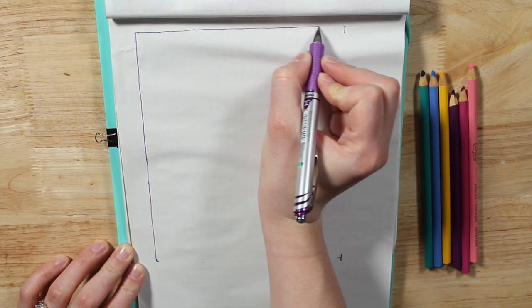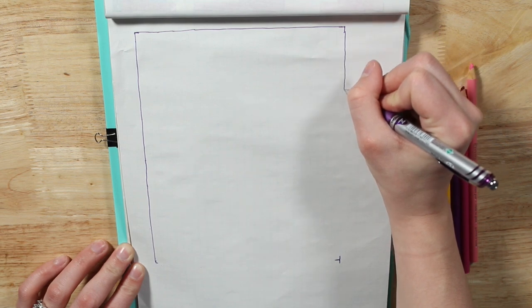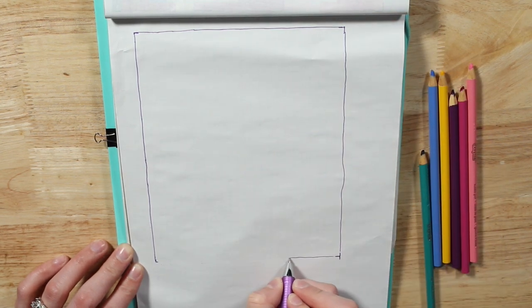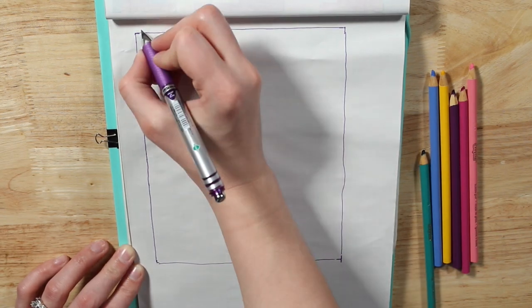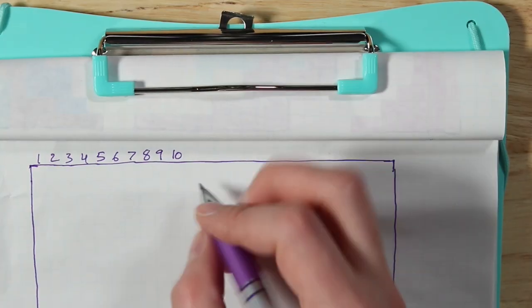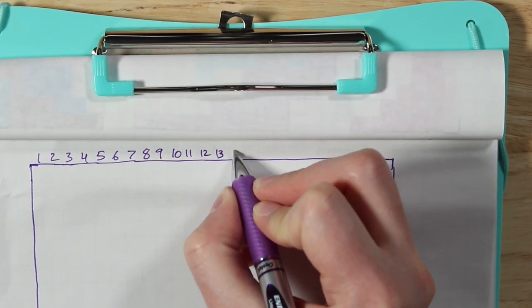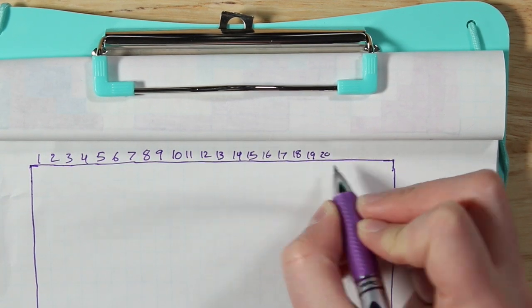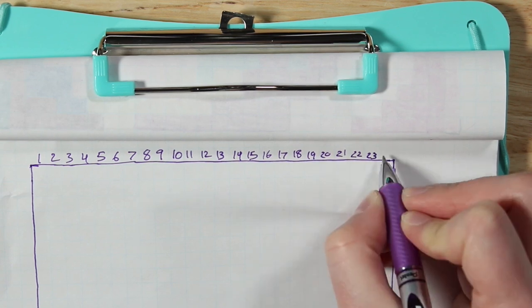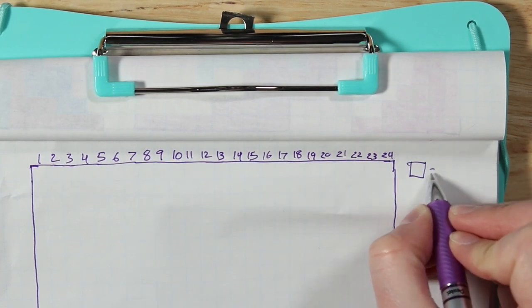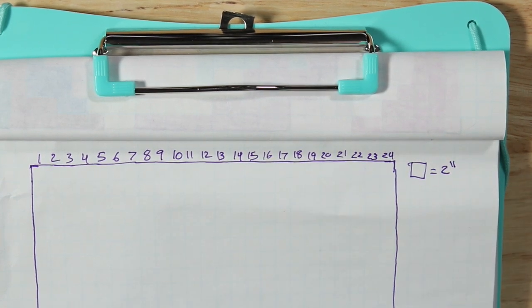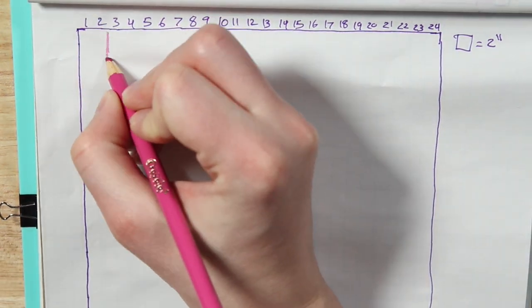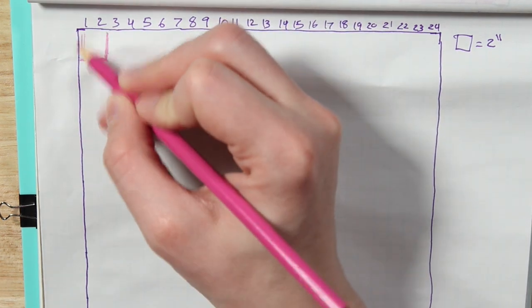To start off this project, I actually started by doing quite a bit of math because I wanted to figure out what size I wanted each link in the paper chain to be and what was the most economical way to use a sheet of paper. So after doing all that math, I decided that my links needed to be 2 inches wide and my final mural size would be about 48 inches or 4 feet wide and about 4 feet long as well. So in this design, I've got 24 columns of paper chains and those are all going to be 30 links.